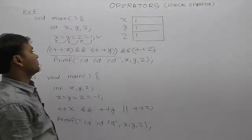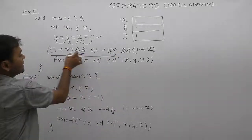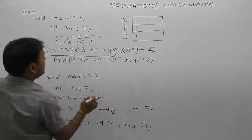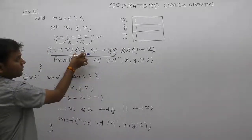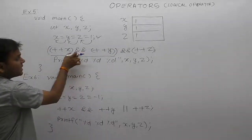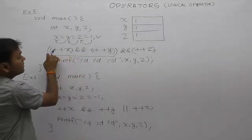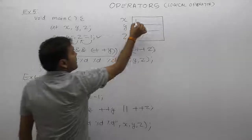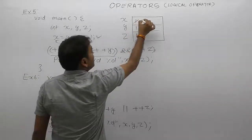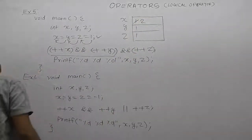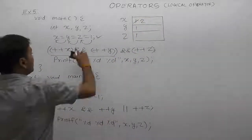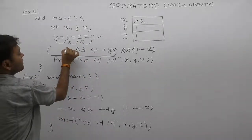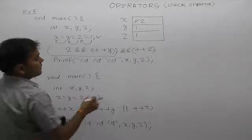The remaining part completely becomes the first operand for the second AND, and this becomes the second operand. First, solving the left AND partition — this is a sub-expression. The first condition of the logical AND operator is pre-increment of x (++x), meaning pre-increment is applied to x.